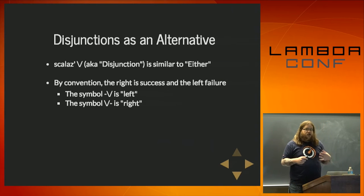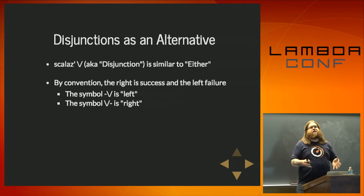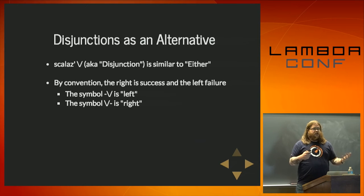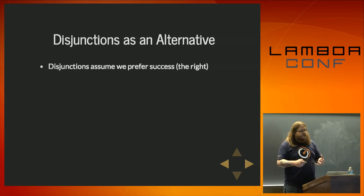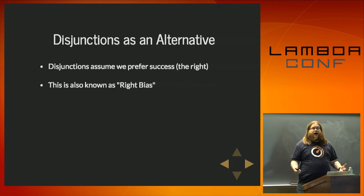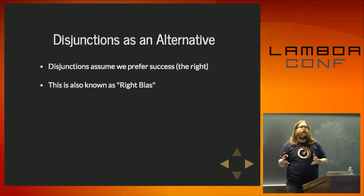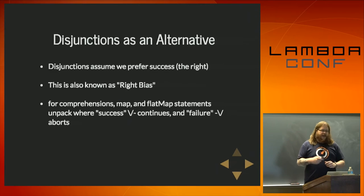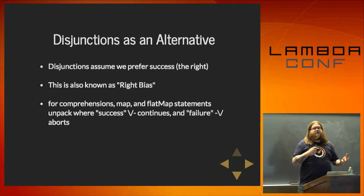By convention in disjunctions, just like with Either, right is success and left is failure. Disjunctions assume that we prefer success — also known as right bias. This data construct assumes you're hoping for a right. For comprehensions, map statements, and flatMap statements basically unpack: a success (right) continues and a failure aborts, just like you'd see with Option. Just like with Option, you can map over Some but you'll always get None back if it's None — there's a bias towards giving you what you need.